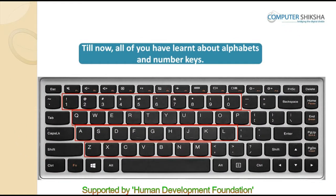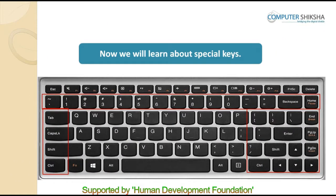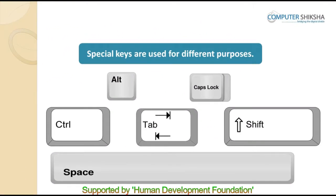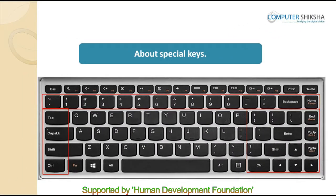Now we will all learn about special keys. If we leave aside the alphabet keys and the number keys on the keyboard, then all the remaining keys are special keys. Special keys are used for different purposes. Today we will learn about some of the special keys, and as we go ahead in our class you will learn about the rest. Look at the picture being shown — special keys have been marked in red colored boxes.